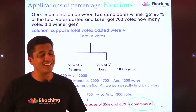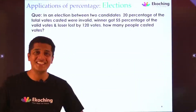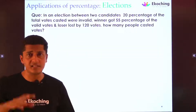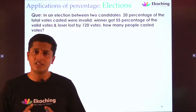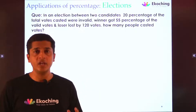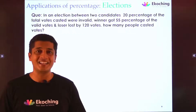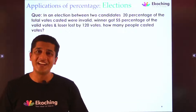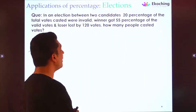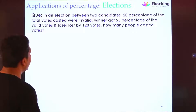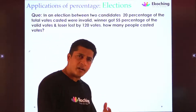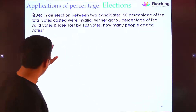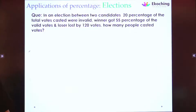Read this question carefully before pausing. In an election between two candidates, 20% of the total votes cast were invalid. The winner got 55% of the valid votes. The loser lost by 120 votes. Find the total votes cast. I hope you've tried it. Using the tree approach — take total votes as V. The first bifurcation: 20% invalid and 80% valid, both of V.